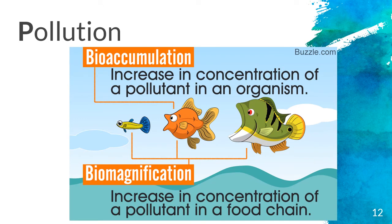Another important driver of extinction is pollution. We often think of it as just chemical pollution. This infographic shows the difference between bioaccumulation and biomagnification. Bioaccumulation is the increase in concentration of a pollutant — like mercury — in a single organism over the course of its life. Biomagnification is the movement of that mercury from fish to fish, accumulating in top-of-the-food-chain predators like orcas — it is magnified as it moves up the food chain.